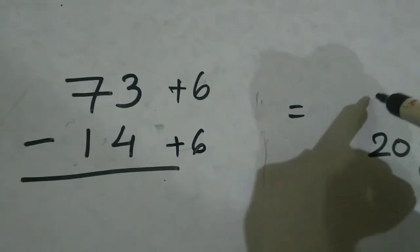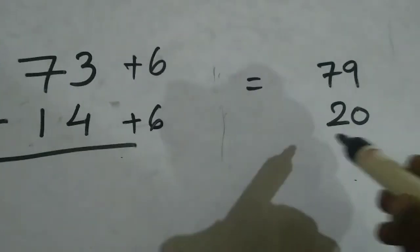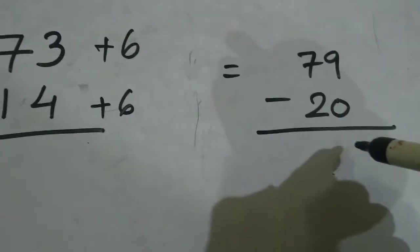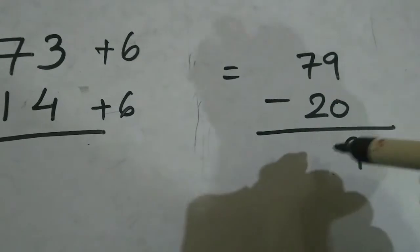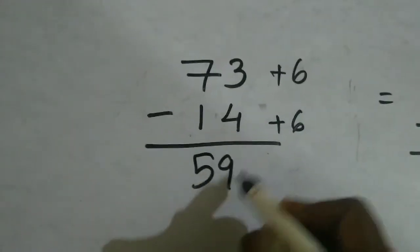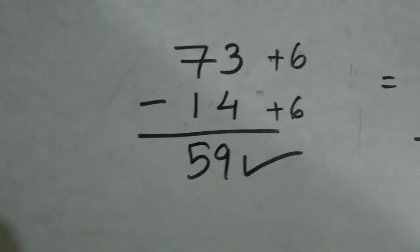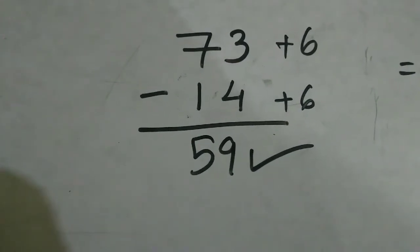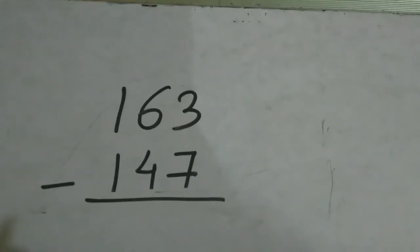After addition we will get 14 becomes 20 and 73 plus 6 becomes 79, right? Yes. 79 minus 20: 9 minus 0 is 9, 7 minus 2 is 5, so 59 is the answer. It's so simple. Just do the calculations in mind.